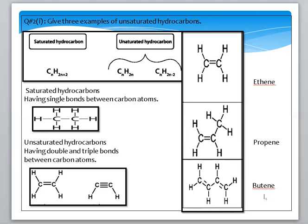Let's talk about butene. Here we can also give examples with triple bonds. Butene has two double bonds in the carbon chain, so the hydrogen linkage is reduced. Its formula is C4H6 because there are two double bonds. Additionally, we can give an example with triple bonds.